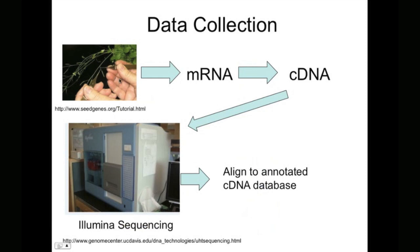To perform this experiment, the researchers took seed pods from both crosses, extracted messenger RNA, created cDNA, and then sequenced a representative sample of cDNAs using a next-generation Illumina sequencer. These sequences were then aligned to an annotated cDNA database, and it's this alignment that the researcher receives.